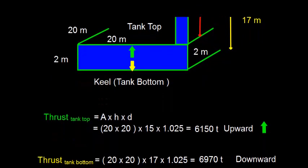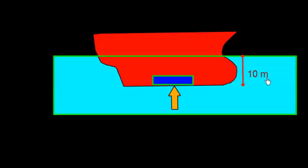So the thrust is 6970 ton after multiplying this, and this is going to act in downward direction. As the vessel is floating in salt water with the draft of 10 meter, there will be thrust on keel plate because of the water outside. The draft mentioned is 10 meter.